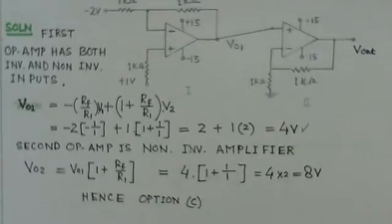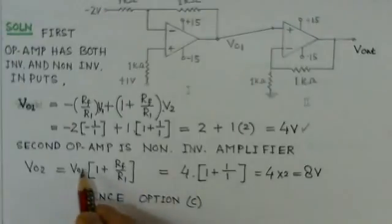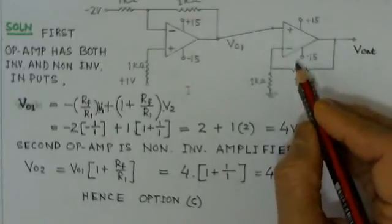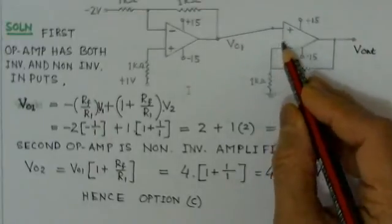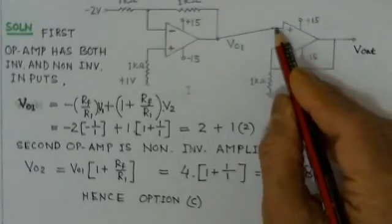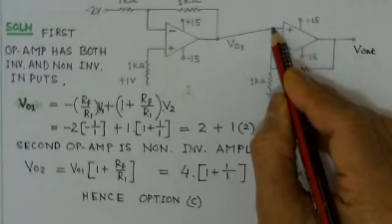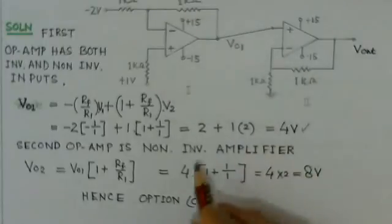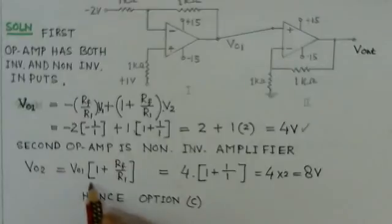of the first operational amplifier. Now let us see the second operational amplifier. Here we know that the second operational amplifier is working as a non-inverting amplifier because the input is applied only at the non-inverting input. There is a relation to find the output: Vo2 equals Vo1 into 1 plus Rf by R1.